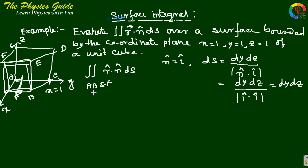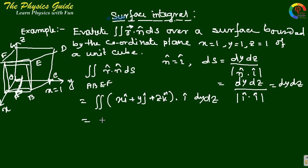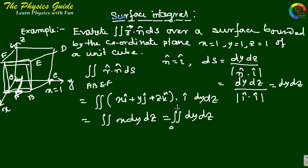The integral of r dot n-hat ds for surface ABEF equals the integral of (x*i + y*j + z*k) dot i-cap dy dz. This gives only i dot i, which is x dy dz. For this plane ABEF, x equals 1 is constant, so this gives the integral of dy dz with limits y from 0 to 1 and z from 0 to 1. This gives 1.